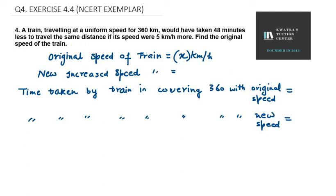Let's start with question number 4, exercise 4.4. A train traveling at a uniform speed of 360 kilometers would have taken 48 minutes less to travel the same distance if its speed were 5 kilometers per hour more. We need to find the original speed of the train.